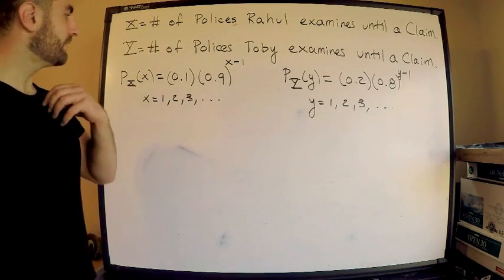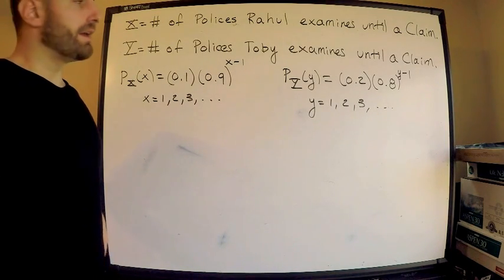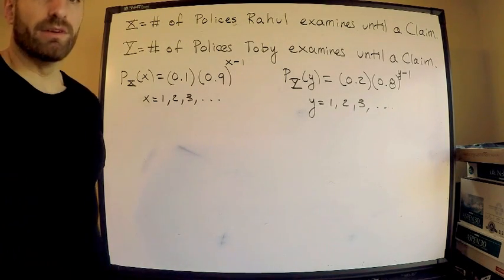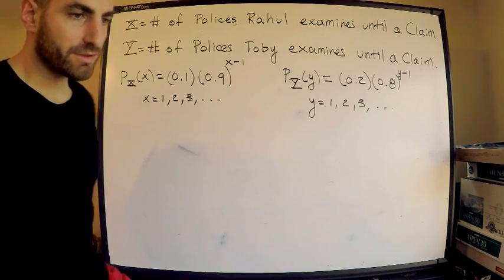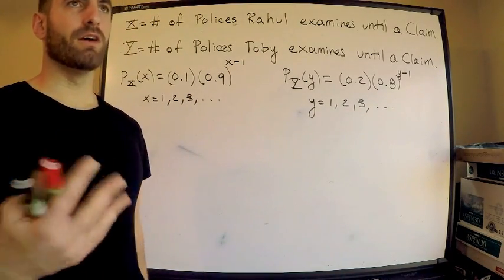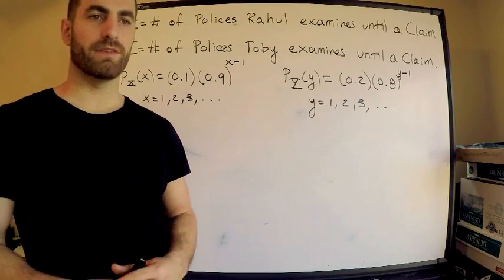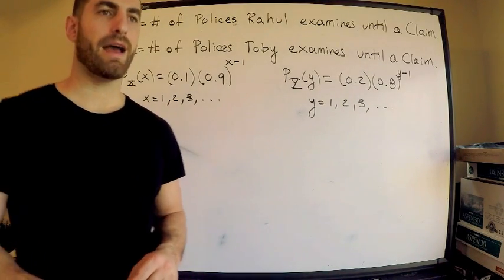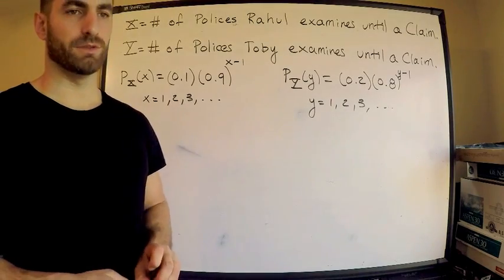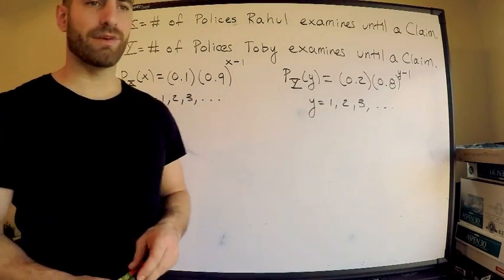Raul actually examines low-risk policies and Toby examines high-risk policies. Now we're also told that the probability of finding a low-risk claim is 0.1, one tenth, and we're also given that the probability of finding a high-risk claim is 0.2.